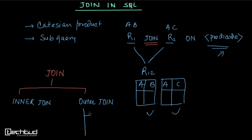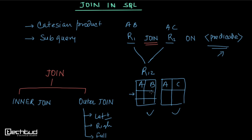In case of outer join, we have three types: left, right, and full. In case of left outer join, if a record from the left table is not satisfying the condition or doesn't have any corresponding record in the right table, still that record from the left table will be included, and for the right side we will have null values.